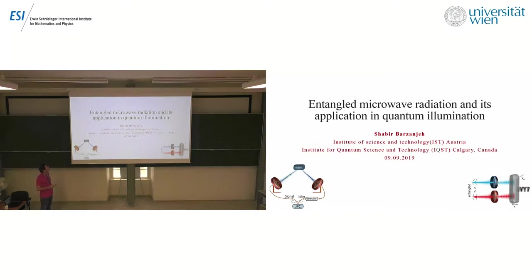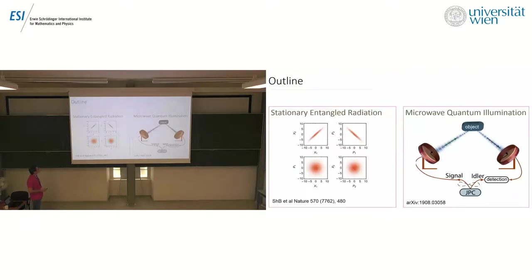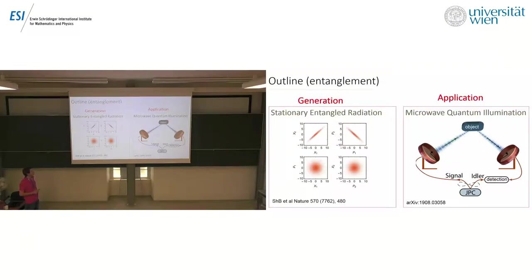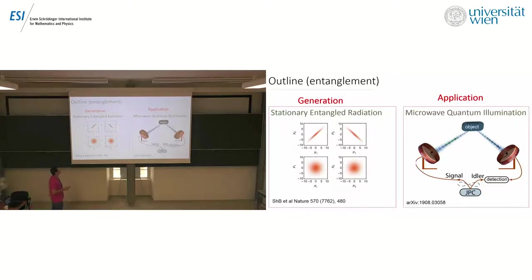Today I'll talk about how to generate entangled microwave radiation using a superconducting system, and I'll discuss a few applications of these kinds of entangled sources. In principle, I will talk about generating stationary entangled radiation and also microwave quantum illumination. The point mainly relating these two topics is just entanglement. In the first part of my talk, I will briefly go through the generation of entanglement in a nanomechanical structure in a superconducting system, and then use this entanglement for the quantum illumination perspective.